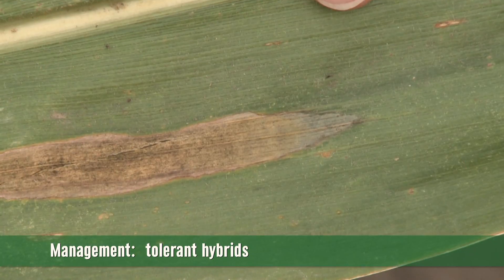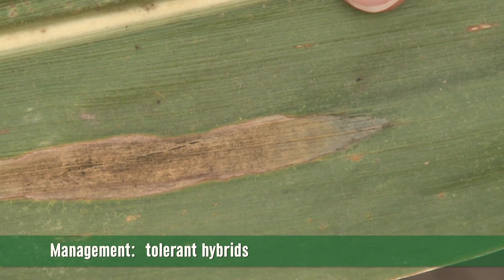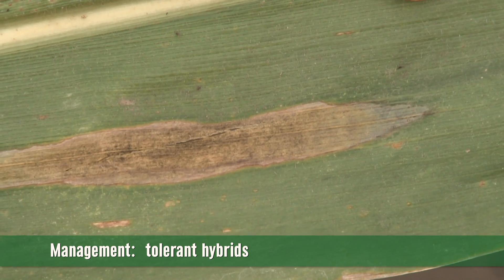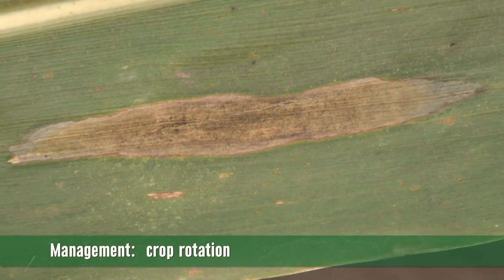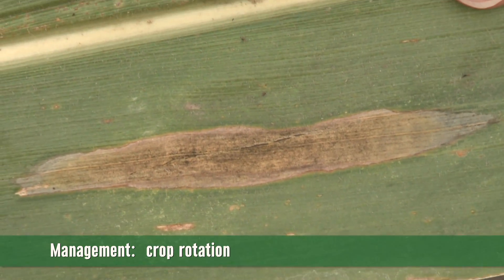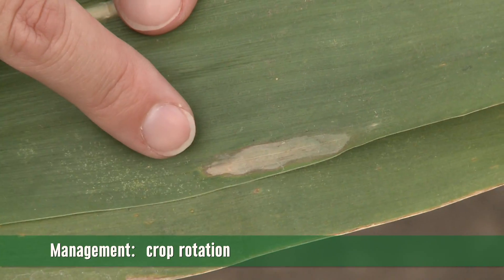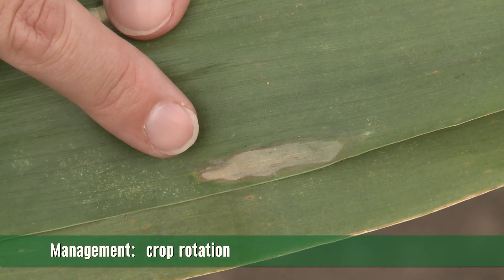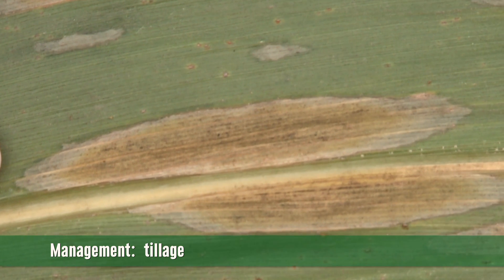As far as management goes, we do have several options. This fungus is a residue-borne fungus, and what that means is if you have the disease this year you're likely to see it again in the future in susceptible hybrids. Crop rotation, since it's residue-borne, can be an effective way of minimizing disease severity in future years, as well as tillage if that's an option for you.